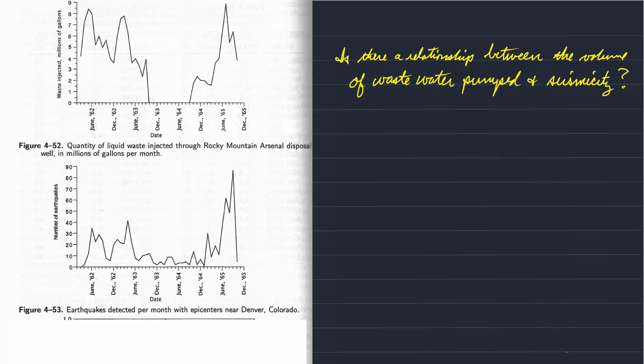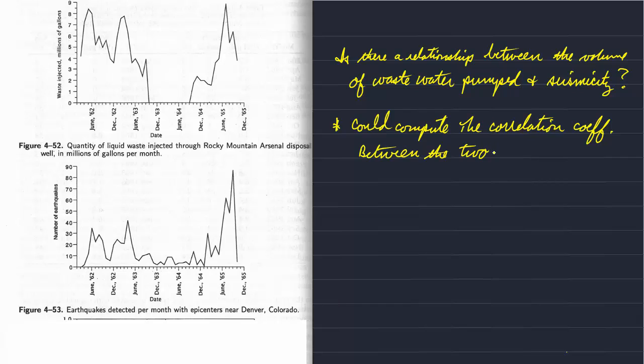So to answer that question we could imagine we could just compute the correlation coefficient between each data set. And as we've looked at correlation, you can imagine plotting wastewater volume versus seismicity and look for any linear trends and that can be quantified with this correlation coefficient.